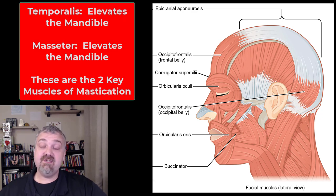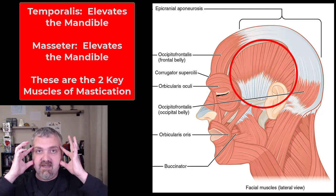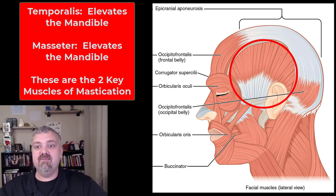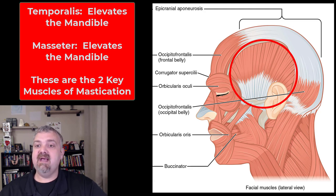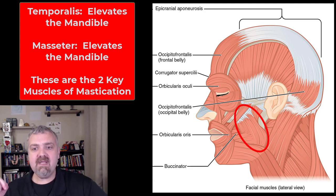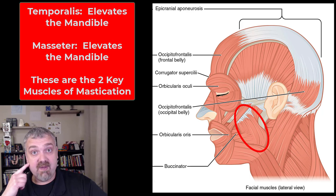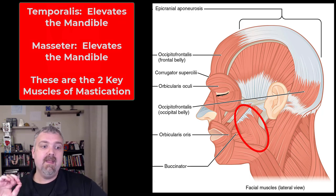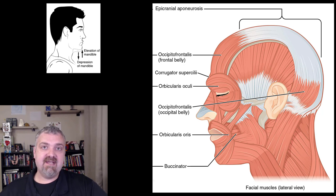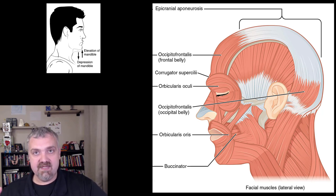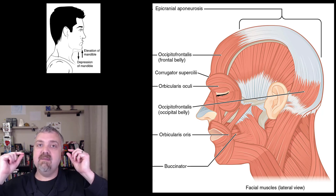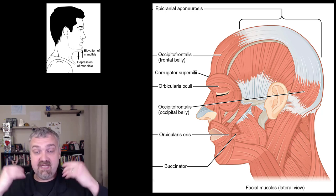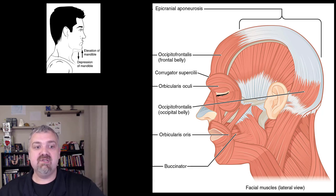Next we have the temporalis and masseter — these two are your muscles of mastication, or chewing. If you put your thumb here and your fingers here and clench your teeth, you feel both muscles tighten up. The temporalis lays over the temporal bone and elevates the mandible during chewing. The masseter connects the upper and lower jaw and also elevates the mandible — probably the strongest muscle we have, pound for pound. Note that both muscles elevate the mandible; no muscles are needed to lower it. Chewing is elevation via muscle contraction, then depression by gravity when those muscles relax.